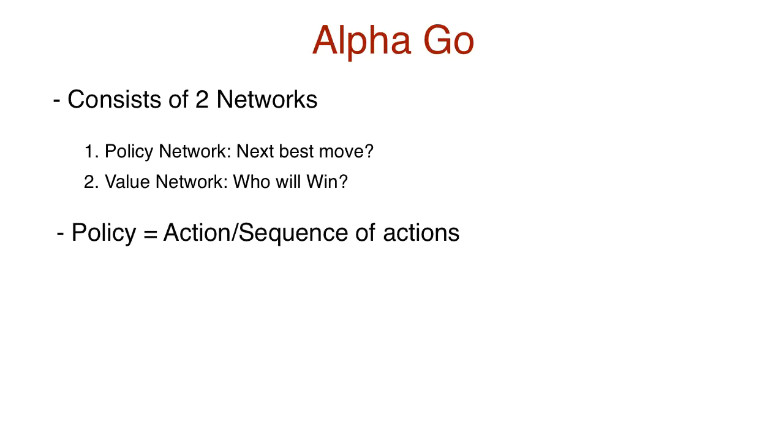A policy is an action or a set of actions to take. The policy network is a supervised learning model that determines the next best move, or the optimal policy. The value network predicts the outcome of the game depending on the move made by the policy model.